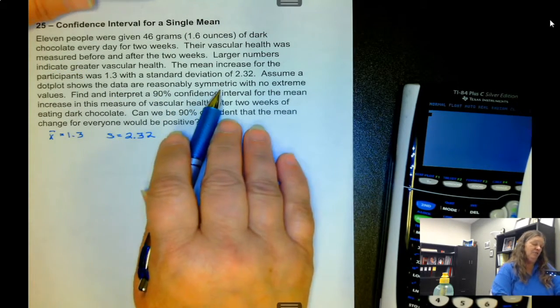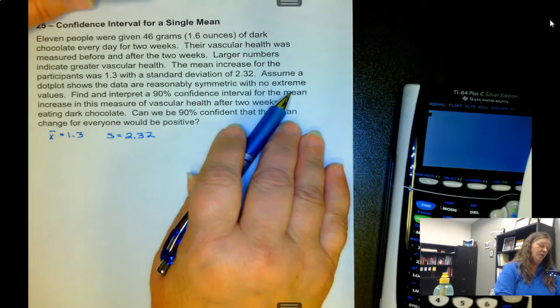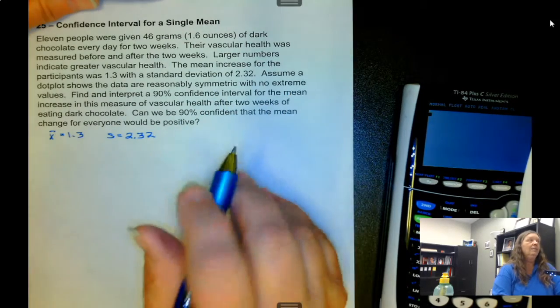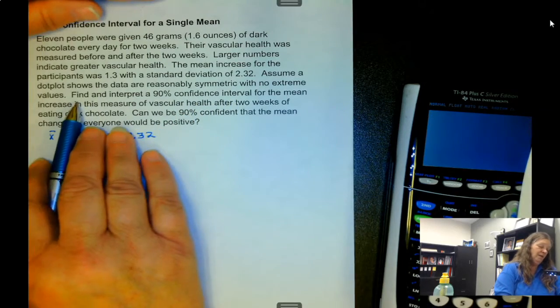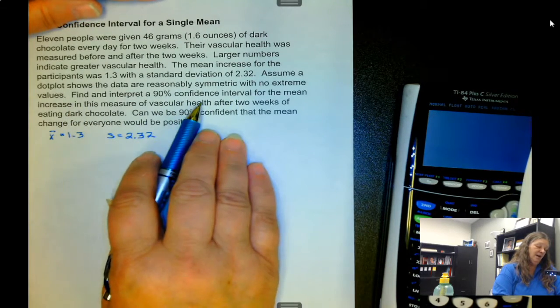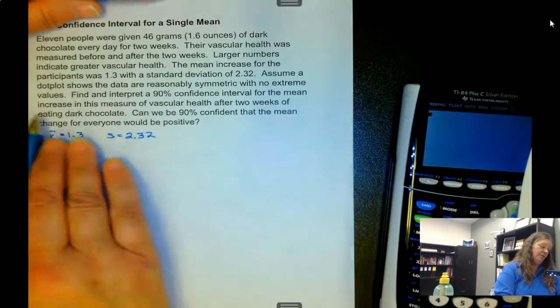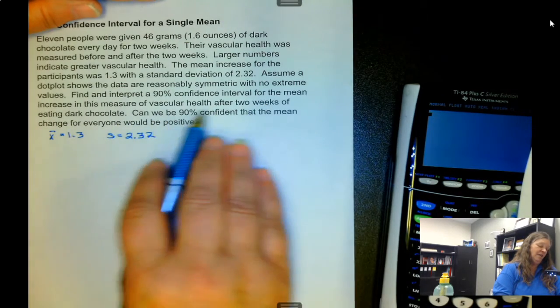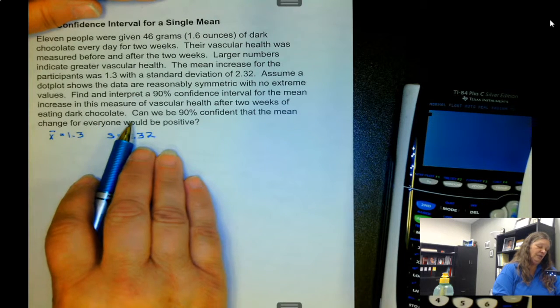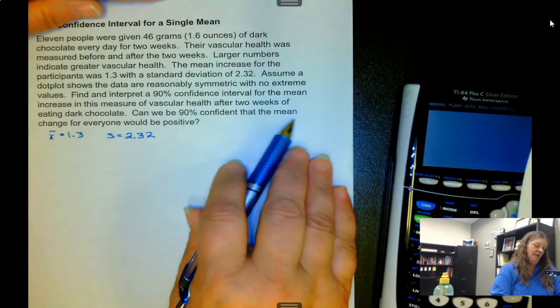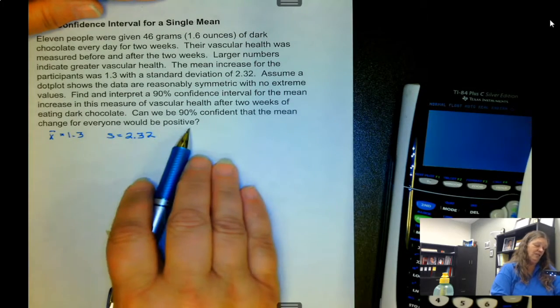the fact that it's reasonably symmetric with no extreme values means that we can go ahead and use the t distribution. Find and interpret a 95, 90 percent confidence interval for the mean increase in this measure of vascular health after two weeks of eating dark chocolate. And can we be 90 percent confident that the mean change for everyone would be positive?